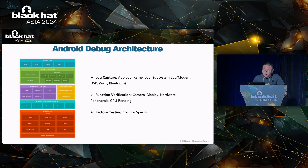Android's native debugging architecture consists of various components from top to bottom: system apps, Java API framework, native C and C++ libraries, Android runtime, hardware abstraction layer, and Linux kernel. The standard debugging architecture serves three main purposes: log capture, which includes capturing app log, kernel log, and subsystem logs such as modem, DSP, Wi-Fi, and Bluetooth; function verification, which involves validating the functionality of modules such as the camera, display hardware, and GPU rendering; and factory testing, which refers to testing and validation during the manufacturing phase.